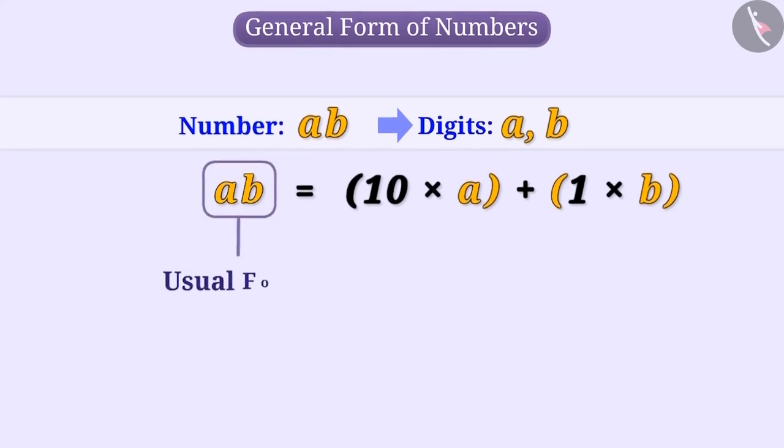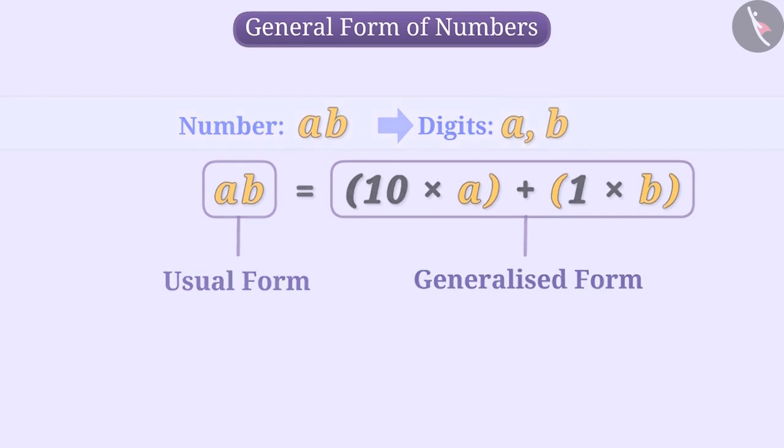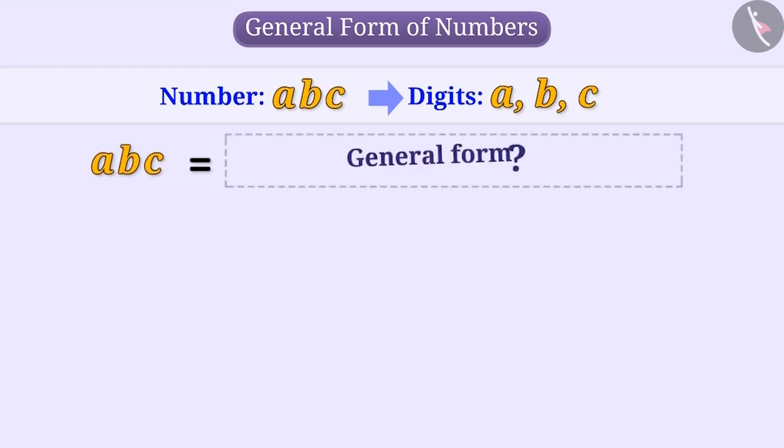We call this form of the number AB the usual form of the number and this form is called the generalized form of the number. Now can you guess how to write the number ABC which has the digits A, B and C in its general form?